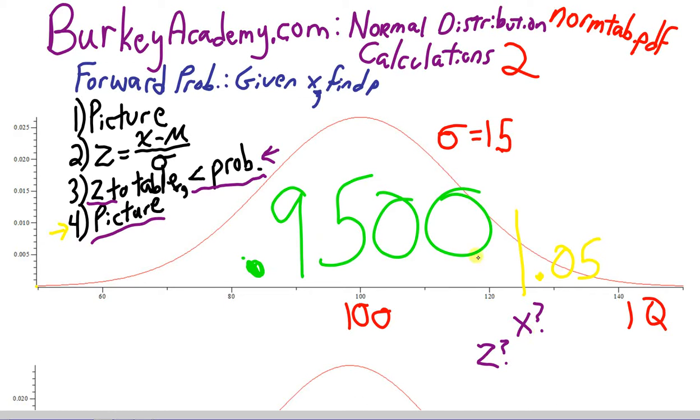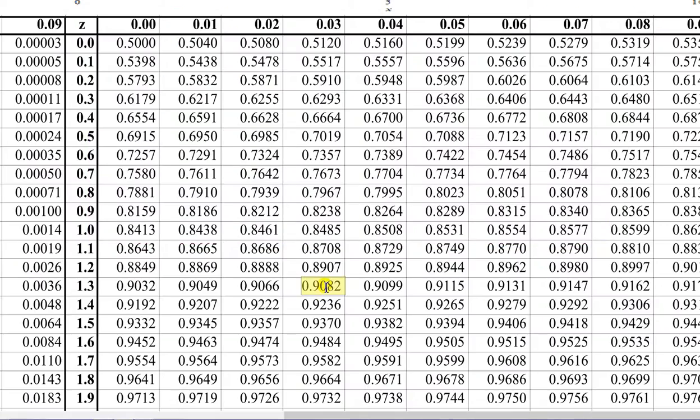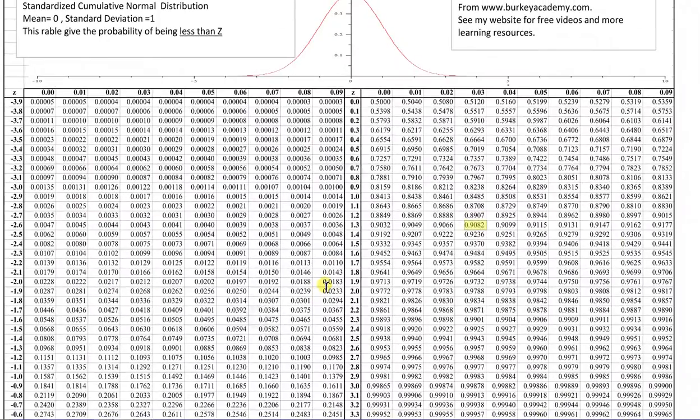So, what we have to do is take this number to the z-score table, look inside the probabilities to try to find what z-score will give us as close as possible to .9500. So, let's go back to our z-score table. Let me zoom out here a bit.